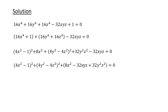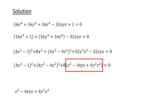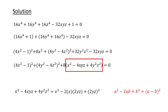Next, we group the terms 8x squared minus 32xyz and 32y squared z squared together, and then factor out an 8. Focusing on the term in the bracket, let's rewrite it as x squared minus 2 times x times 2yz plus (2yz) whole squared. Using the identity a squared minus 2ab plus b squared equals (a minus b) whole squared, with a equals x and b equals 2yz, the expression becomes (x minus 2yz) whole squared.